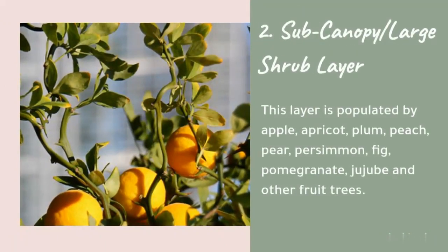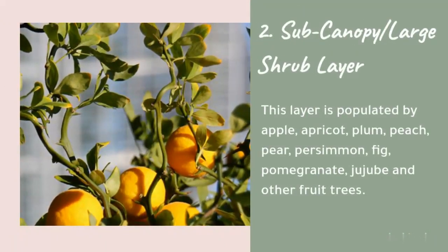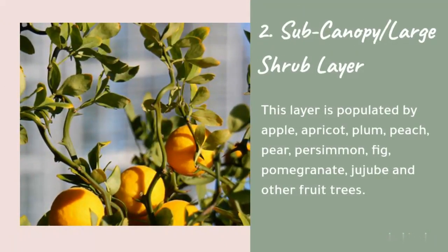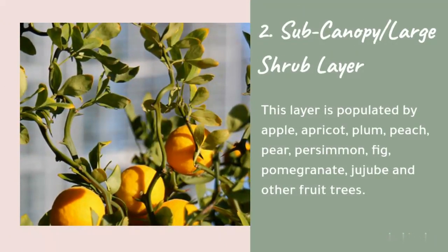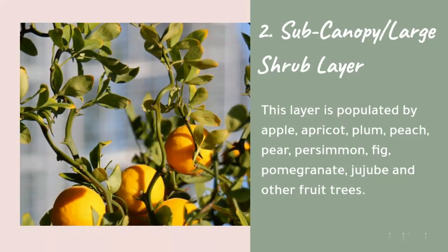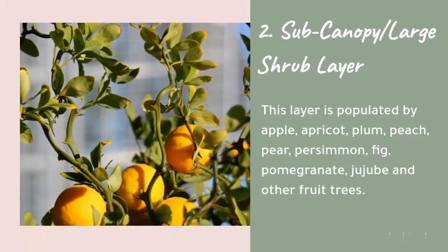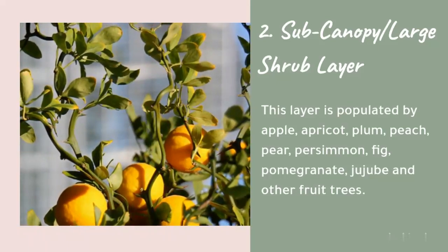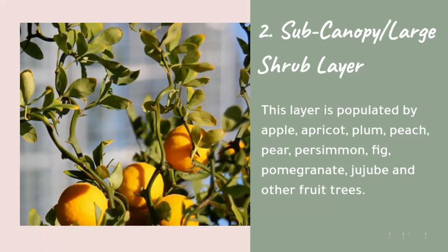Layer 2: Sub-canopy or large shrub layer. This layer is populated by apple, apricot, plum, peach, pear, persimmon, fig, pomegranate, jujube, and other fruit trees.